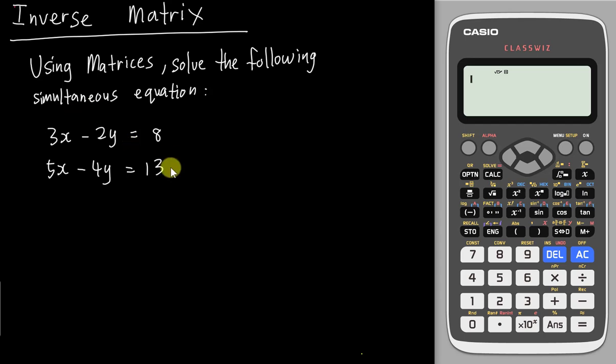So the first idea to solve this kind of question is you need to separate them into different matrices. Their matrix patterns are kind of fixed. You have a 2×2 matrix, this is a matrix order, and then a 2×1 matrix, and it equals to 2×1 matrix. The 2×2, basically you need to fill in the coefficient of x and y. In this case, which is the number in front of x and y here, you just copy.